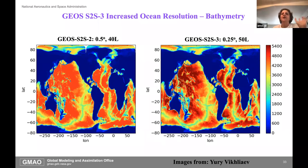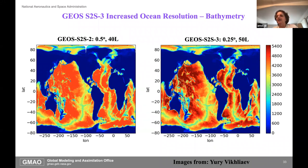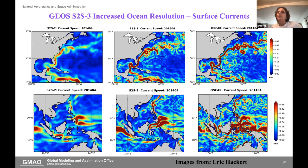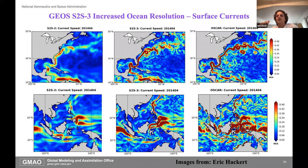One motivation for going to high resolution: here is the 50 vs. 25 km ocean difference in bathymetry. The bathymetry is deeper with the higher resolution, and importantly it gives us better resolution in some of the through-flow areas—the Indonesian throughflow, the Florida Straits, etc. The other benefit from the resolution is resolving surface currents: on the left is the 50 km, the middle column is the 25 km, and on the right are observational estimates. You're starting to get the Loop Current resolved here in Florida.